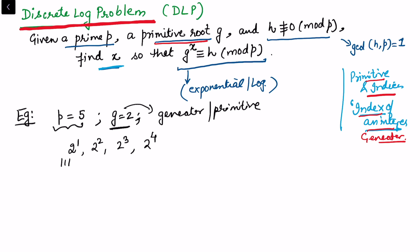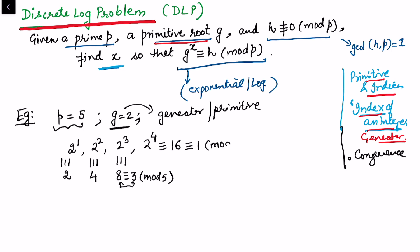As g = 2 is the generator or primitive root, let's take all the exponents: 2^1, 2^2, 2^3, 2^4 — up to 2^φ(n). We will see it generates all elements relatively prime with 5. So 2^1 = 2, 2^2 = 4, 2^3 = 8 ≡ 3 (mod 5), and 2^4 = 16 ≡ 1 (mod 5). The generator has generated all elements {1, 2, 3, 4} that are relatively prime with 5.